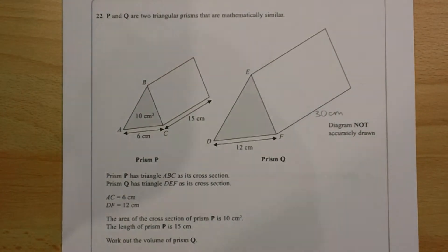Now this is the bit where you've got to be careful. Although these lengths are twice as big on prism Q, this area which we need to work out the volume of this prism is not twice that. Let me show you why that's the case.